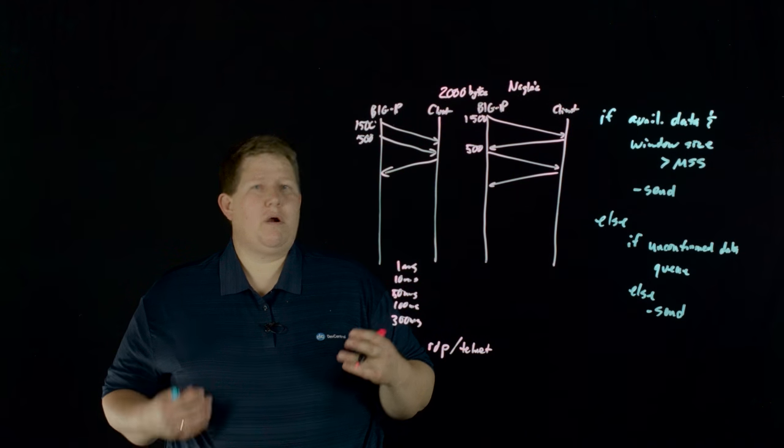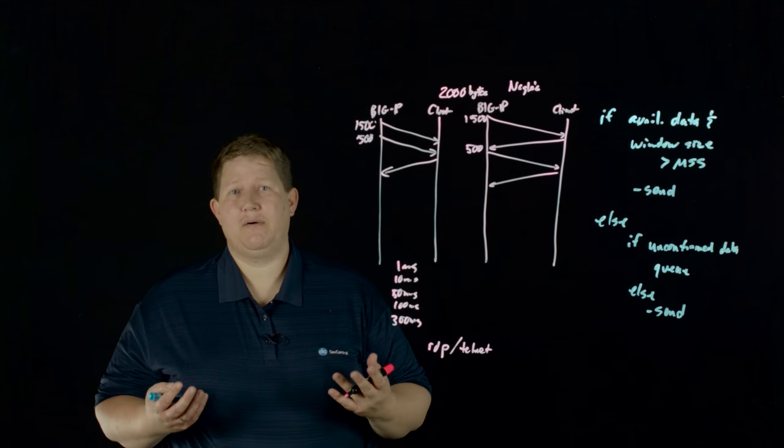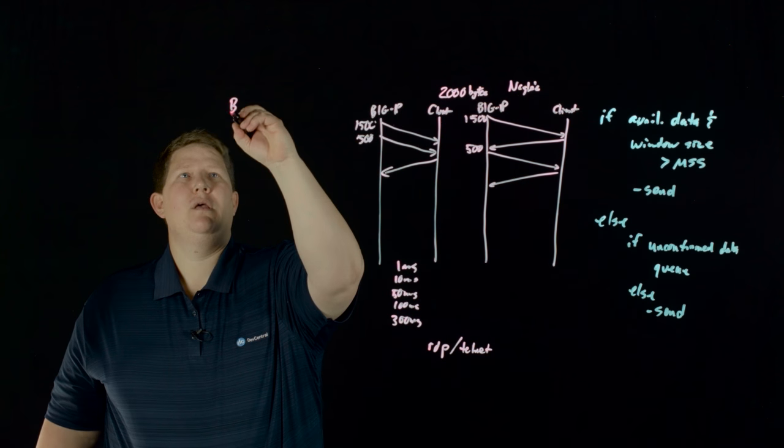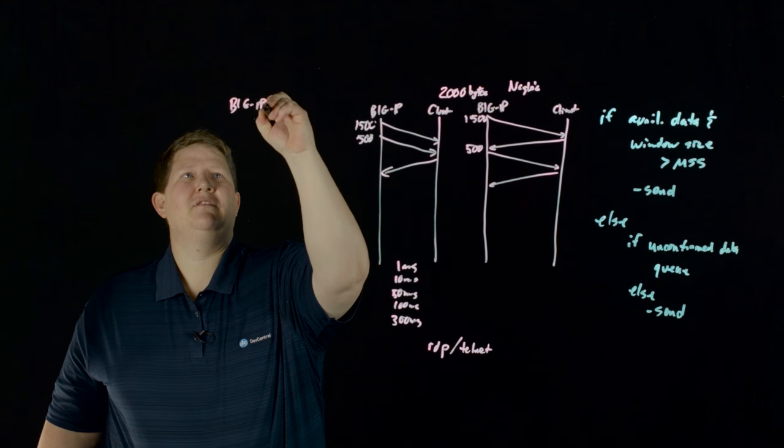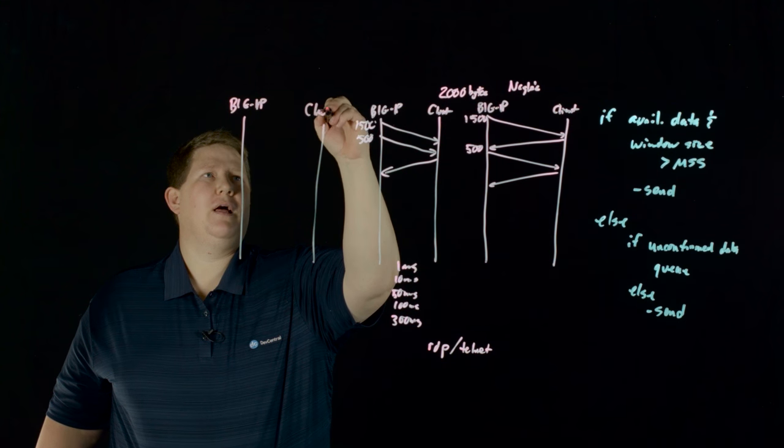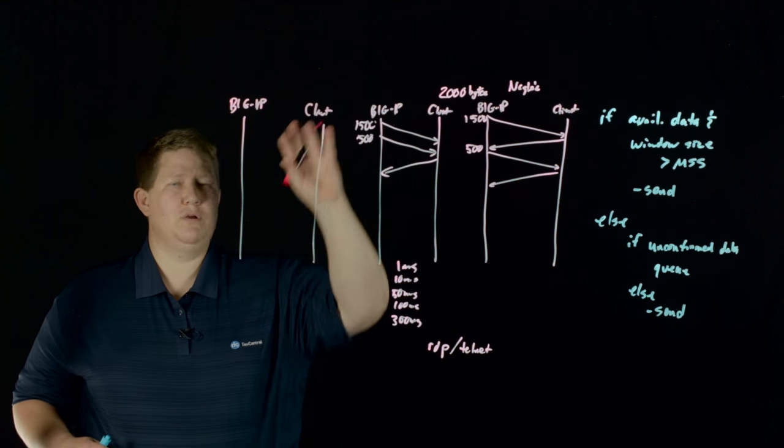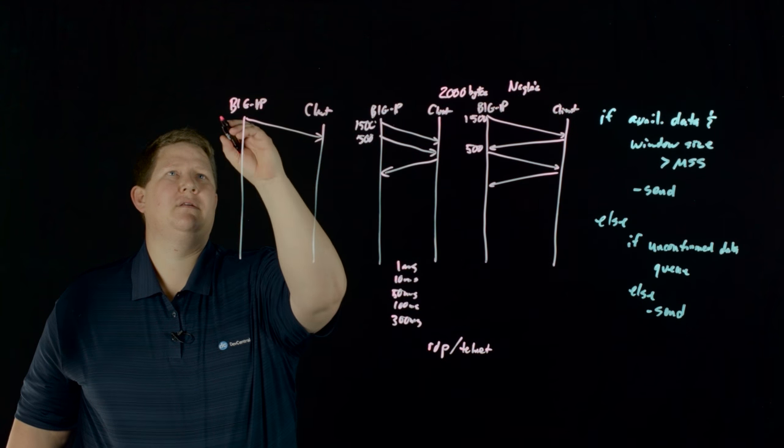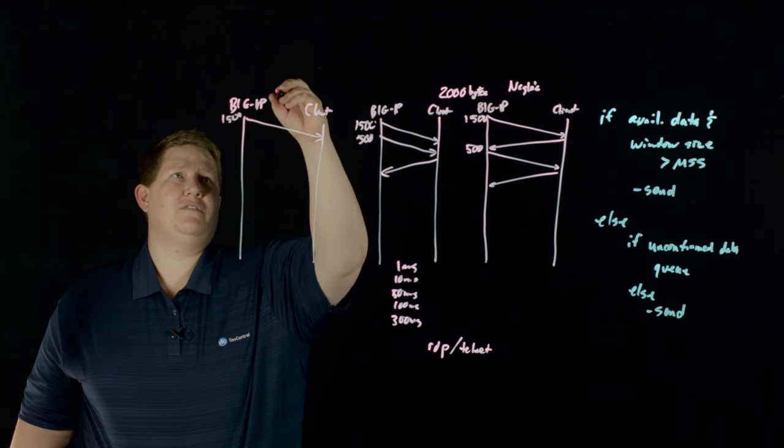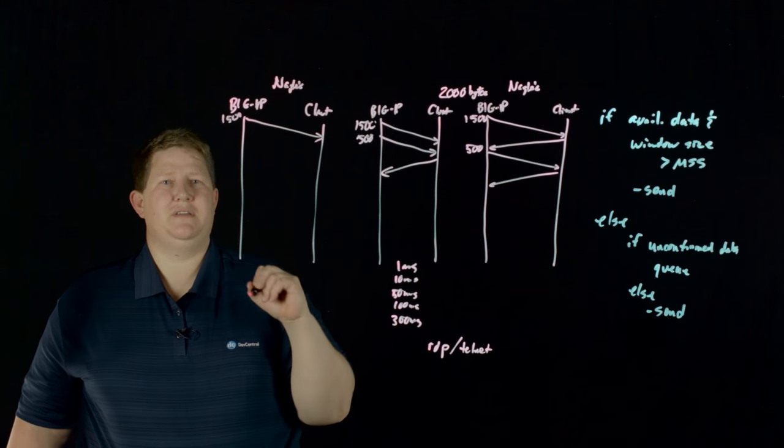And so there are some things with Nagle's to be aware of. And that's the way that they interact with delayed acknowledgements. And so if you have a big IP, say, or just a sender, but we'll say the sender's the big IP and you have a client and a delayed acknowledgement, mostly on the receiver side, big IP sends the 1500 and maybe has, and so say Nagle's is enabled. So the client receives that.